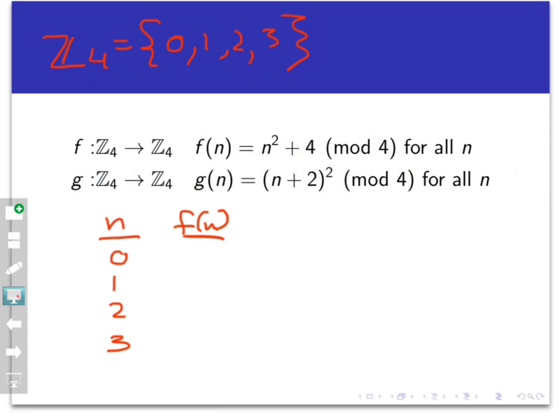But watch this. Let me make a little table here, and it is a little table. There's only three things I can possibly put into these functions here. If I go to f of n, if I put in 0 for n, I get 0 plus 4, and 4 mod 4 is 0. If I put in 1 for n up here in f, I have 1 squared plus 4, that's 5, and 5 mod 4 is 1. If I put in 2, I have 2 squared, which is 4, plus 4, which is 8, and 8 mod 4 is 0. And finally, 3 for n up in here would be 3 squared, which is 9, plus 4, which is 13, and 13 mod 4 is 1.